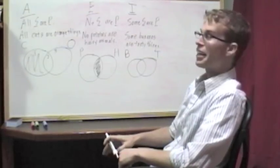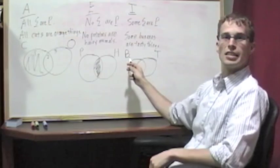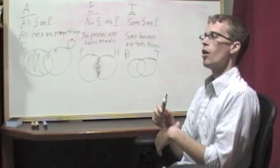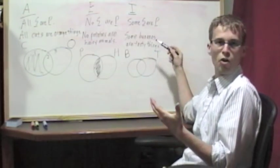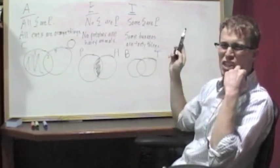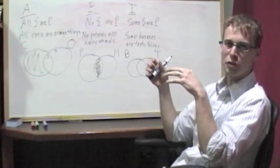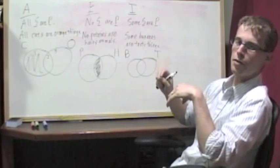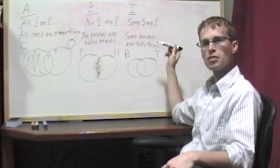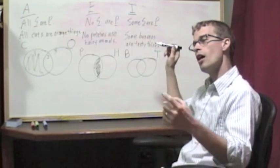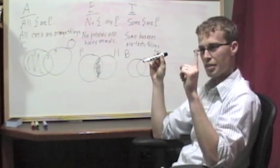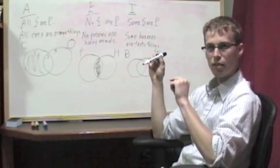So we have our B circle and our T circle representing bananas and tasty things. And we don't want to claim something about all bananas because we don't know whether all of them are tasty or just some of them. If some bananas are tasty things, then we're saying something about at least one member of the class of bananas, and we're saying that at least one member that's a banana is also a tasty thing.